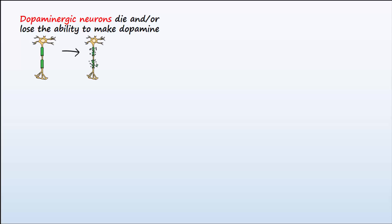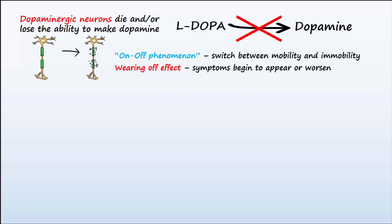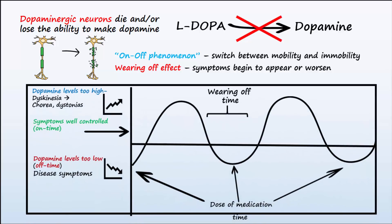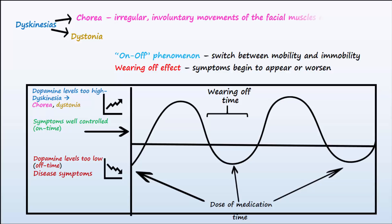As the disease progresses, dopaminergic neurons die and their ability to take up the administered L-DOPA and convert it into dopamine decreases. This brings about rapid swings in the brain's response to dopamine, referred to as the on-off phenomenon. This phenomenon typically starts to occur after five years of treatment with L-DOPA. Disease symptoms are worse when dopamine levels are too low, and alternatively, the patient experiences dyskinesias when levels are too high. Dyskinesias most often observed with Parkinson's medication therapy include chorea — irregular involuntary movements of the facial muscles or limbs — and dystonias, which most often involve the head, neck, or feet, causing abnormal muscle tone that impairs voluntary movements.